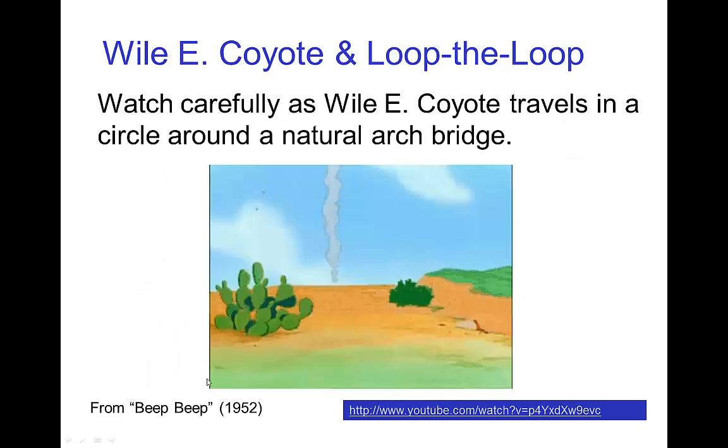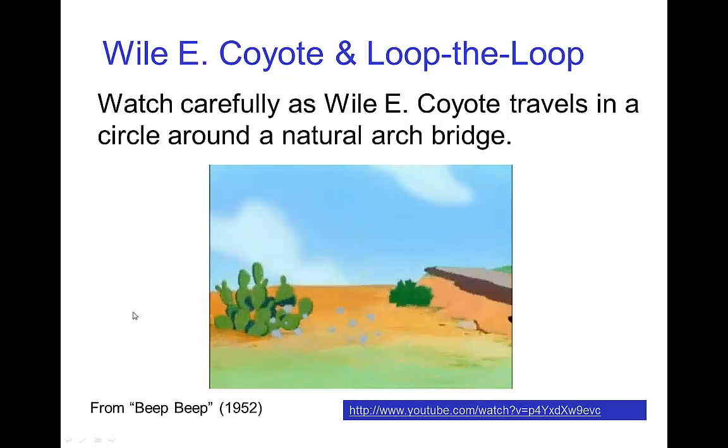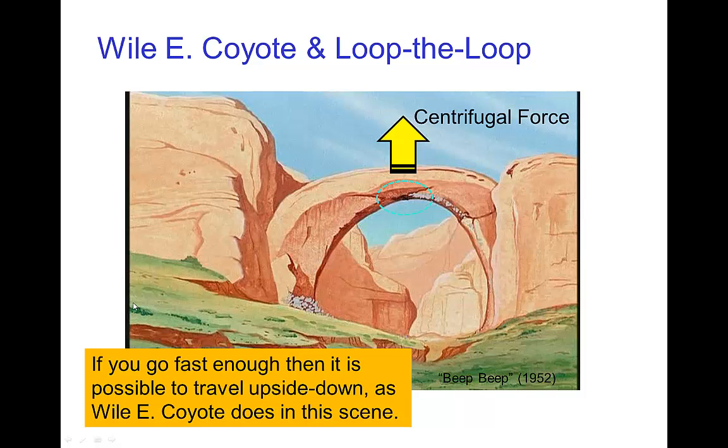Let's look at an example where this appears in Wily Coyote. So you see there he's on rocket skates. He's traveling, he goes around in this circle, and he goes all the way around without falling down, because it's as if there's some centrifugal force that's pushing him upward, and that's why he doesn't fall down when he is upside down in this scene.